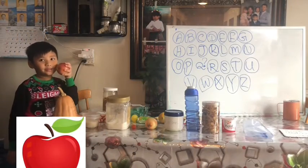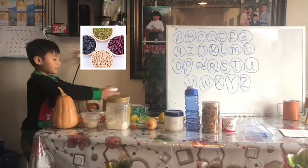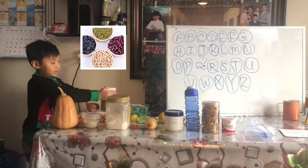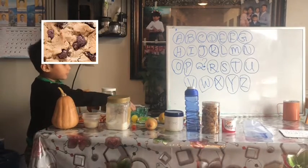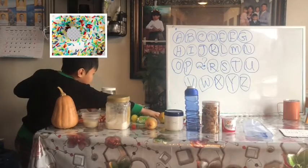A is for apple, B is for beans, C is for cookies, D is for donuts.